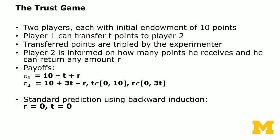So you've all played the trust game on MobLab, and I'm going to summarize the trust game that you've all experienced, and we're going to summarize the paper. So there are two players, each with an initial endowment of 10 points.